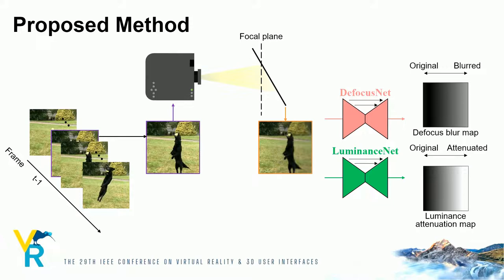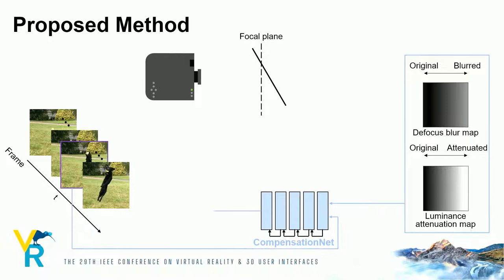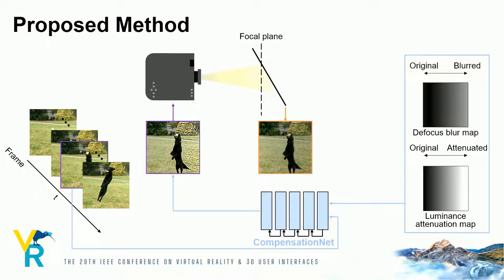In addition, our luminance net estimates a luminance attenuation map that represents the degree of reduction of the captured luminance of the projected result compared to that of the target luminance, due to the inverse square law of light intensity. Note that other information is also injected into these networks; please refer to the paper for details. The compensation net generates a compensation image from these maps and the target image of the current frame. By projecting a compensation image, defocus blur is suppressed, and dot pattern images are not required to be projected.